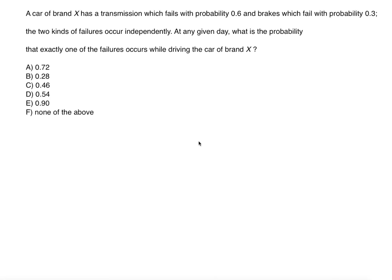In this problem we're going to discuss another probability example. A car of brand X has a transmission which fails with probability 0.6, and brakes which fail with probability 0.3. The two kinds of failures occur independently. At any given day, what is the probability that exactly one of the failures occurs while driving car brand X?